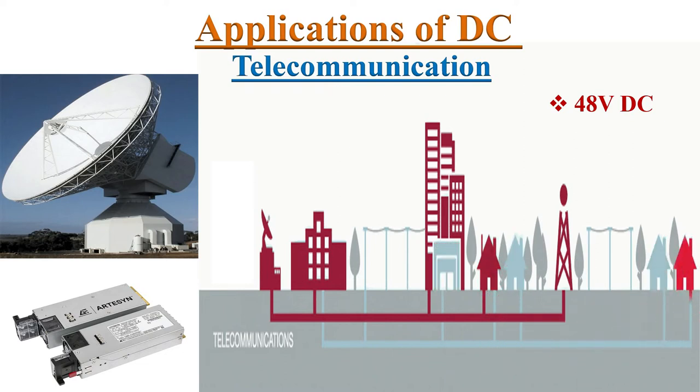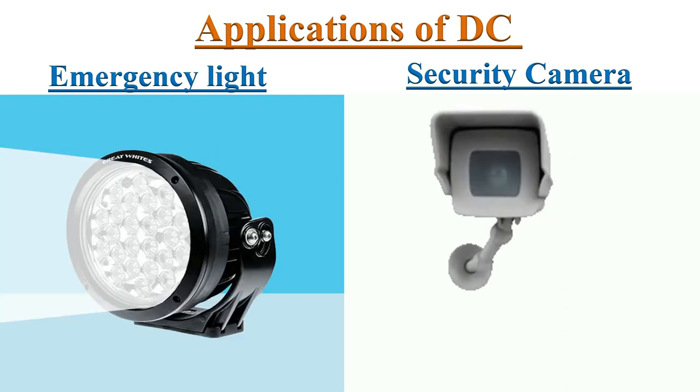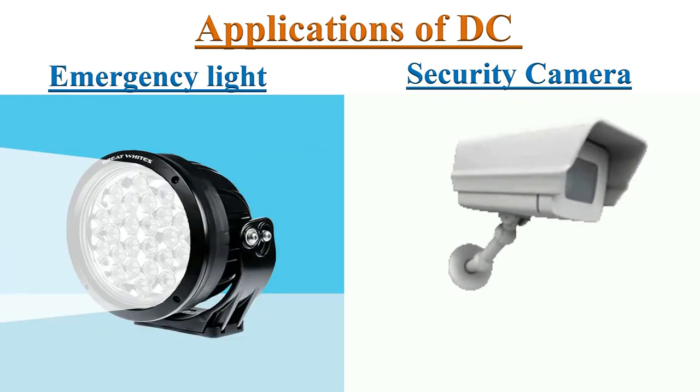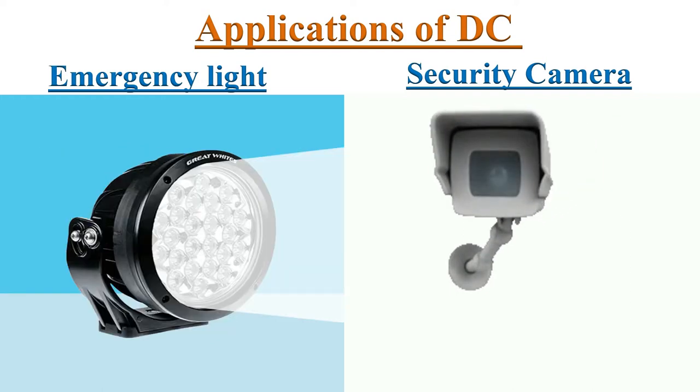Generally, telecommunication equipment uses standard 48 volt DC power supply. It uses a single wire for communication and uses a ground for the return path. Most of the communication networking devices operates on the direct current. Direct current used for emergency lighting and security camera in domestic and commercial buildings.